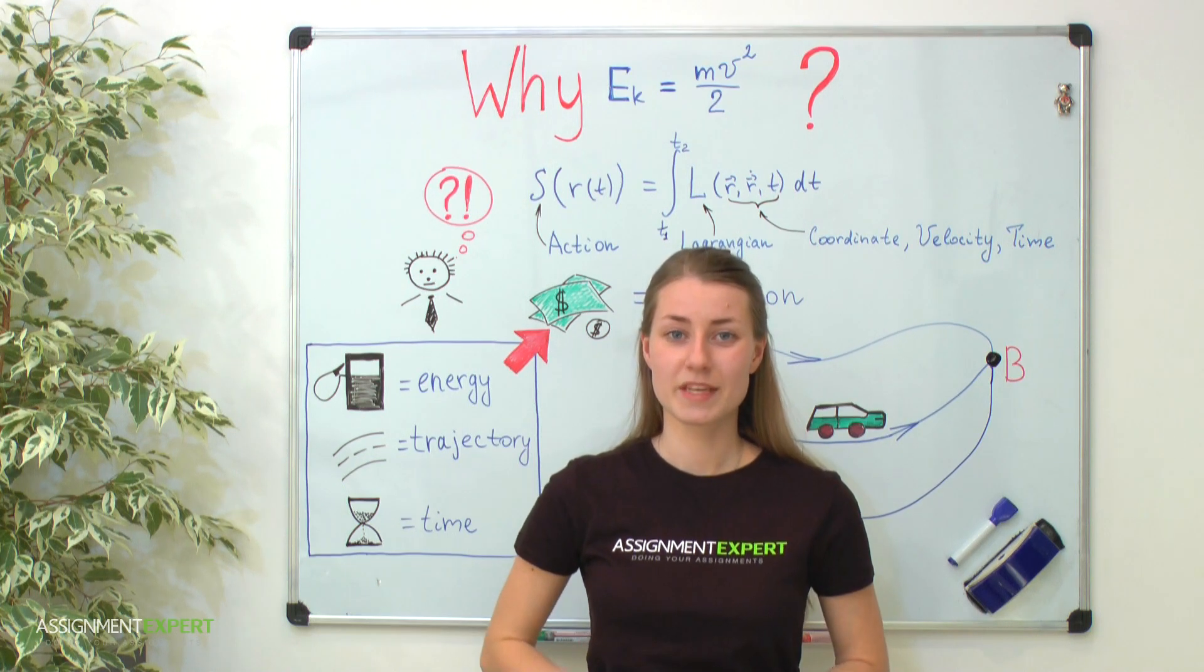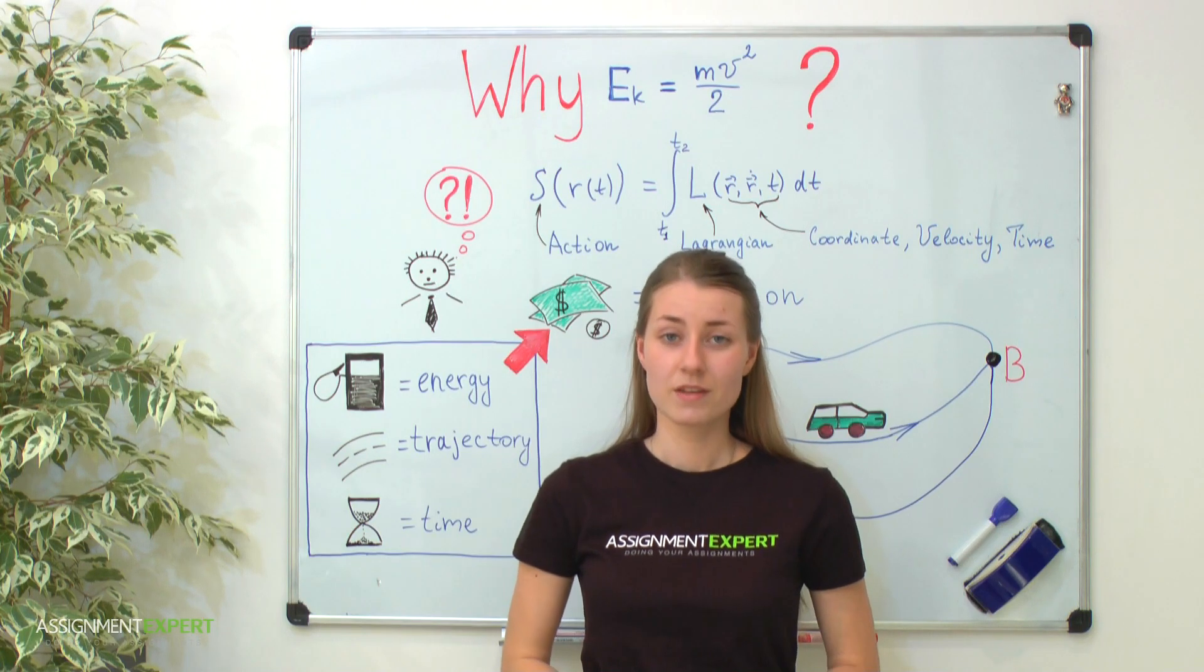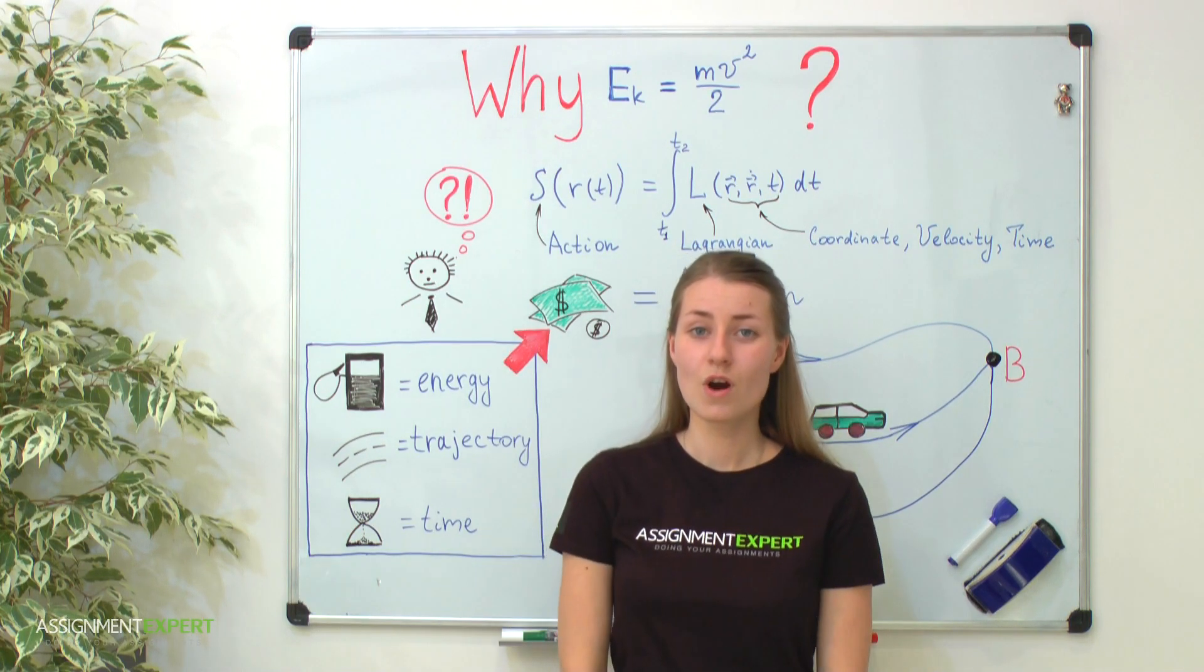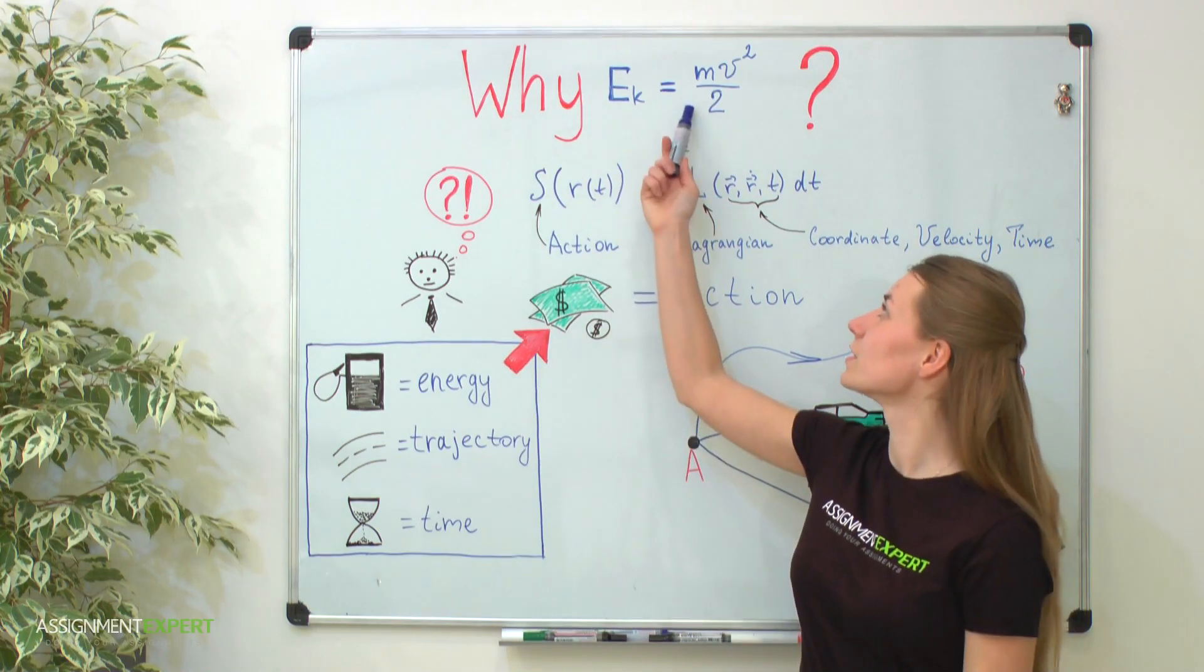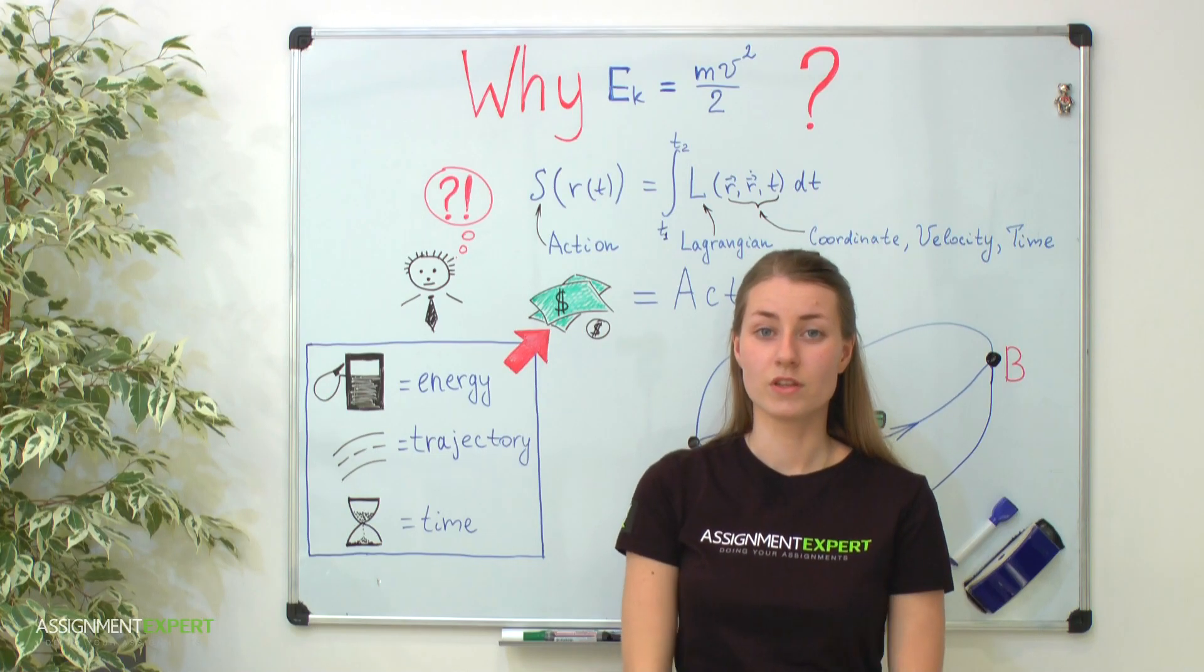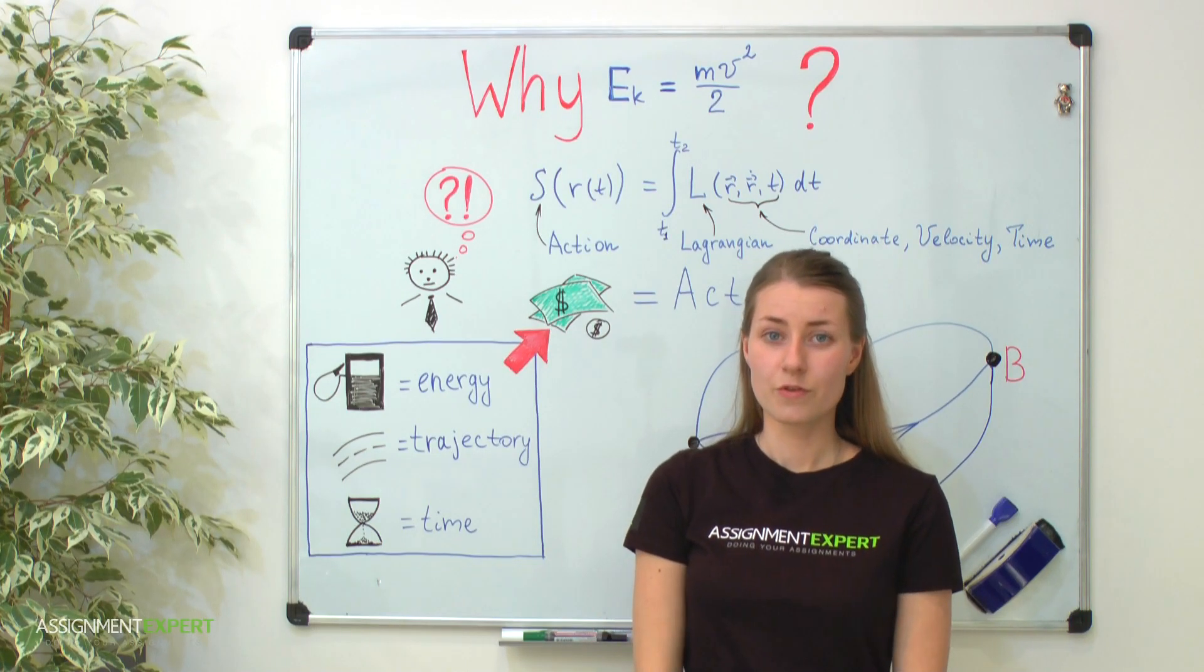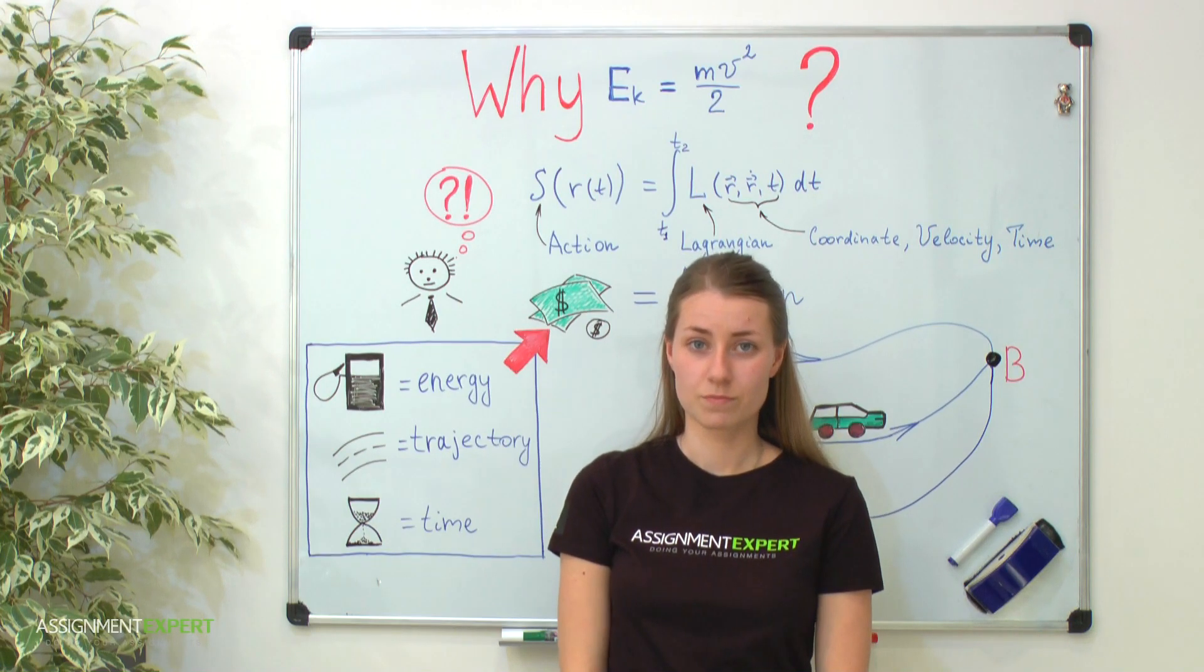Hello! It's Assignment Expert channel and today we again talk about physics. Now we are going to puzzle out for you why the kinetic energy occurs exactly in the form mv² divided by 2. But to do it mathematically strictly, we introduce it via the Lagrange formalism. The first part of this video will be quite technical, but it was the result. Let's begin.